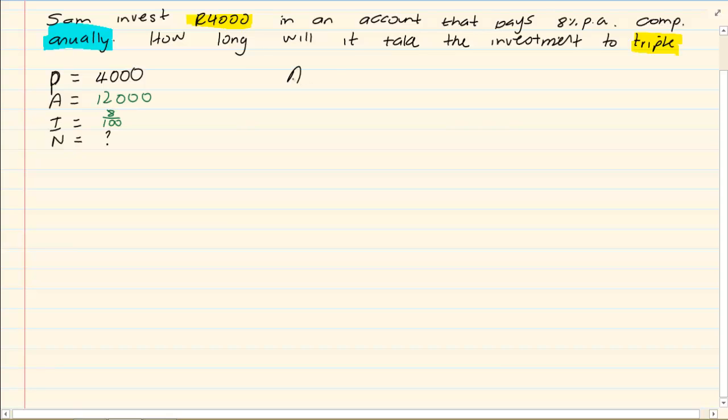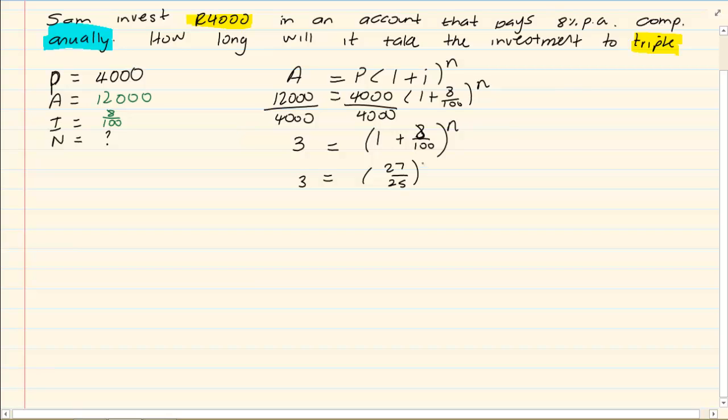Now once we have our information, we simply substitute. Now we are going to get rid of our 4000. So we have 1 plus 8 over 100 to the power of N is equal to 3. So we have 3 is equal to 27 over 25 to the power of N.